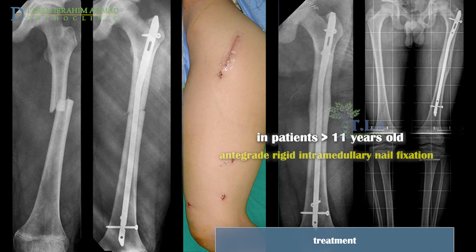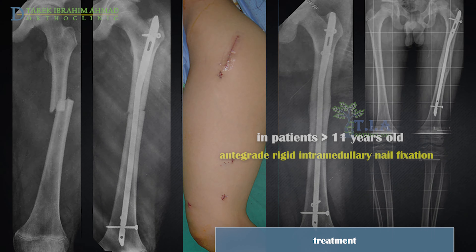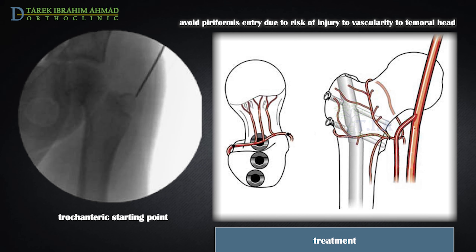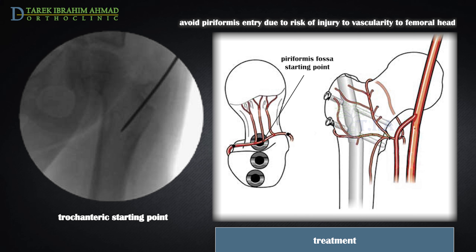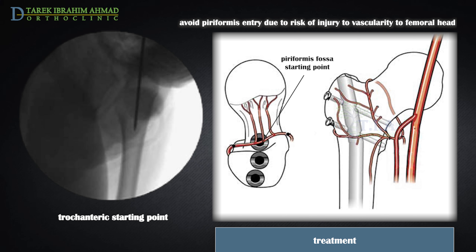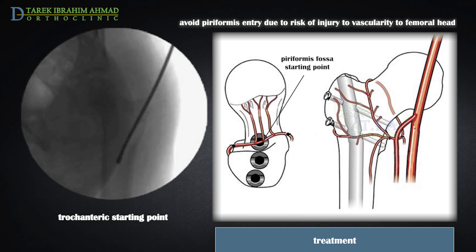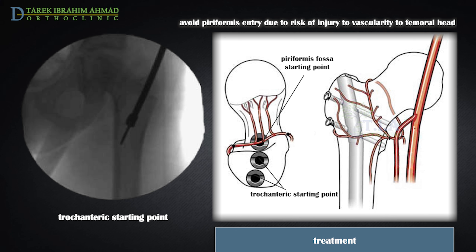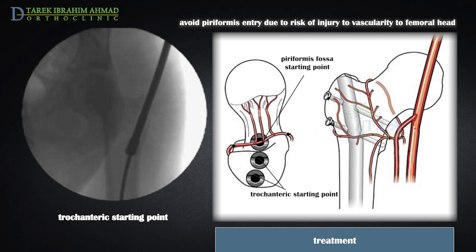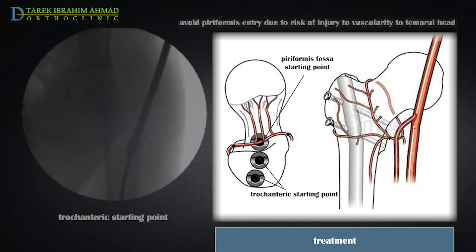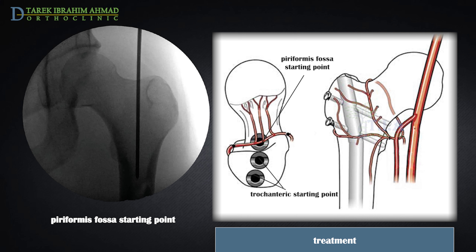After age 11, the diameter of the femur will allow intramedullary fixation with a rigid locked rod, which is then the preferred treatment. In younger children, the traditional piriformis fossa starting point is associated with a small but significant rate of osteonecrosis of the femoral head. Consequently, a trochanteric starting point is used until skeletal maturity has been attained, after which a piriformis fossa starting point is preferred for the adolescent population.